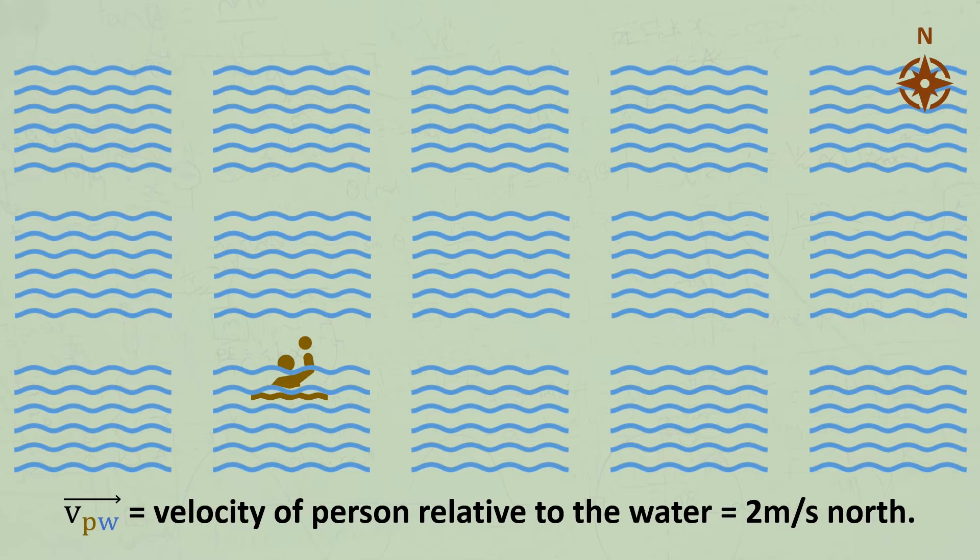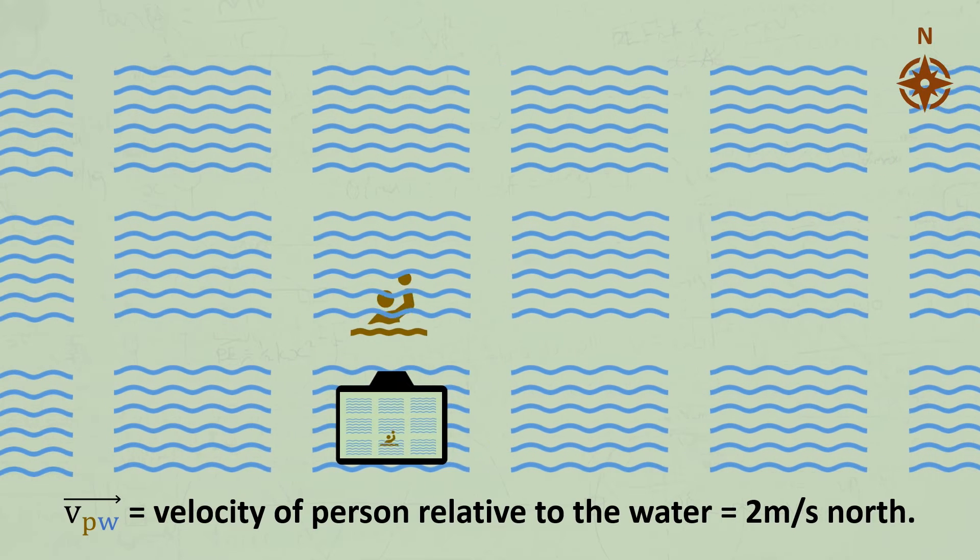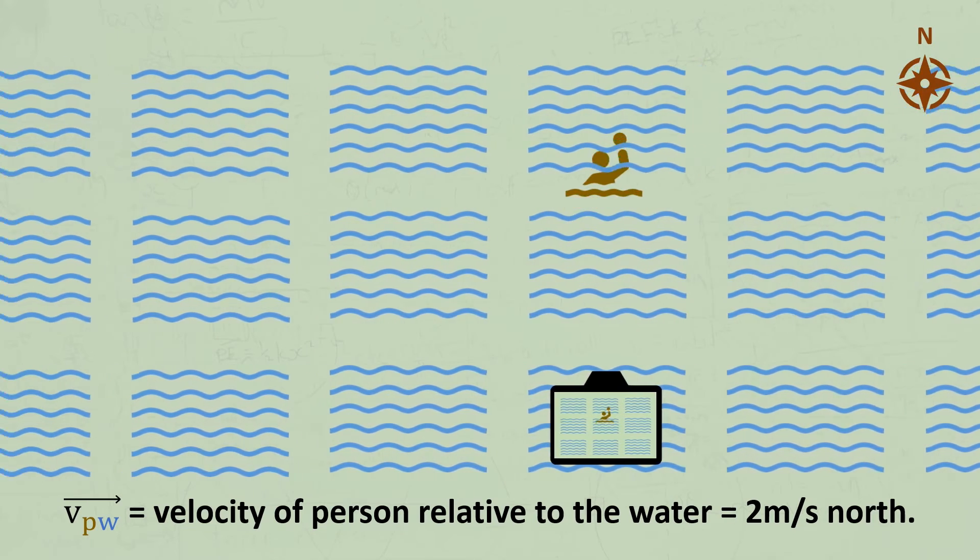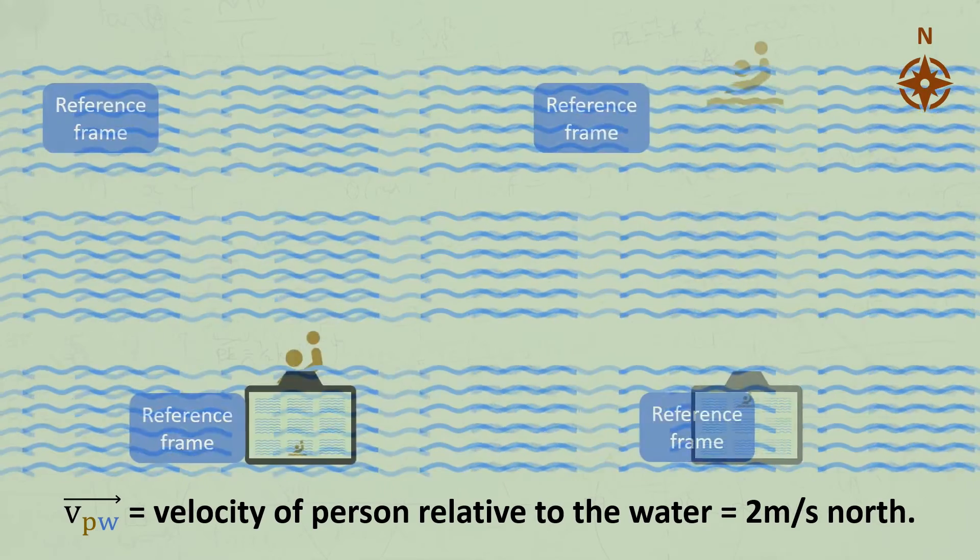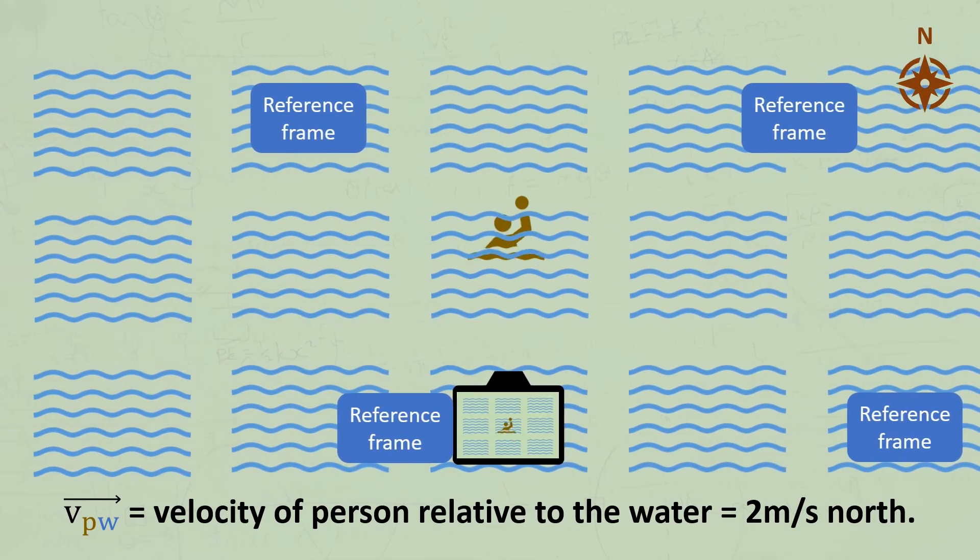Let's imagine that we dropped that GoPro into the river with a flotation device, which some swimmers actually use. It would now float along with the swimmer and record her swimming north at 2 metres per second. It wouldn't record her motion to the east because the camera is in the same reference frame as the water.